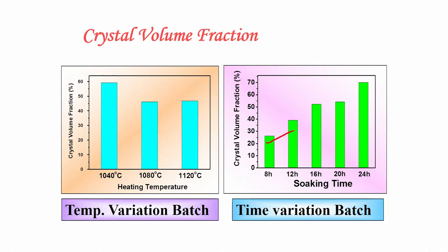Not only does the fluoro phlogopite phase appear, but its volume fraction also increases with time. From 8 hours to 24 hours, the fluoro phlogopite phase reaches close to 70% crystalline, with 30% amorphous glass. In the temperature-variation batch, the crystal volume fraction is about 60% at 1040°C, reducing to around 45% at 1120°C.